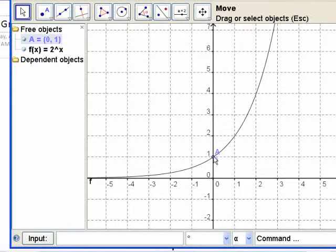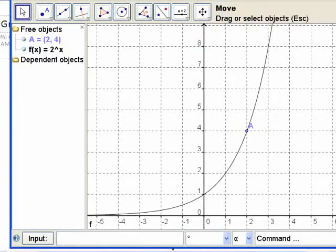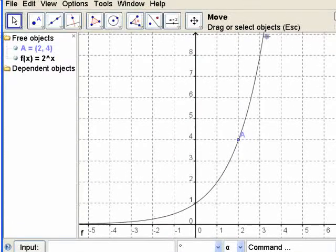So it has a y-intercept of 1. So 0, 1 is a point. 1, 2 is a point, right? Because 2 to the 1 is 2. 2 to the 2 is 4. If I move this down, you might be able to see a little bit more even. 1, 2 to the 2 is 4. We can get the very next point down here. 2 to the 3 is 8.